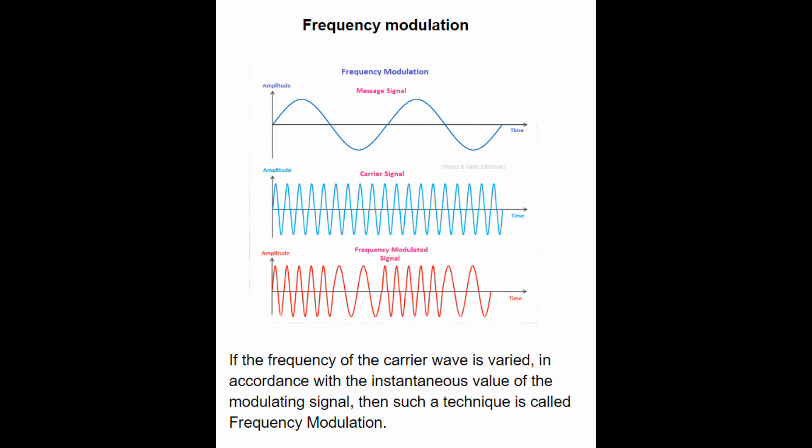The second one is frequency modulation. If the frequency of the carrier wave is varied in accordance with the instantaneous value of the modulating signal, then such a technique is called frequency modulation.